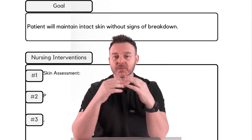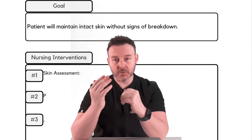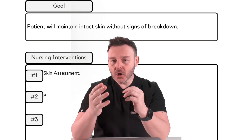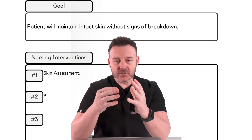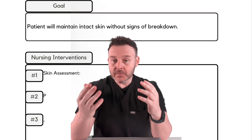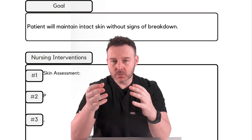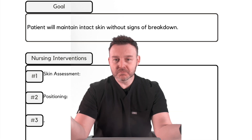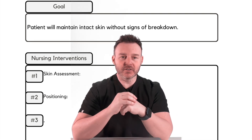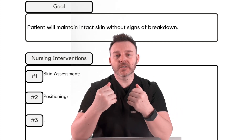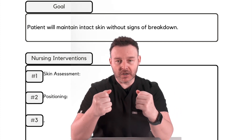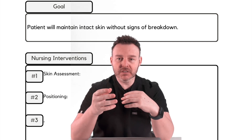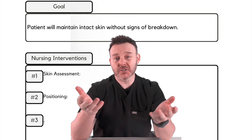What interventions will we do to prevent skin breakdown? The first is skin assessment — something we should always be doing, but particularly important for this patient. Perform a comprehensive skin assessment on admission and multiple times throughout your shift, paying close attention to bony prominences and areas under external devices. Document and photograph any changes such as redness, warmth, or breakdown. Another intervention is repositioning — turn and reposition the patient every two hours to relieve pressure on vulnerable areas, and use pressure-relieving devices such as air mattresses, cushions, and pillows.